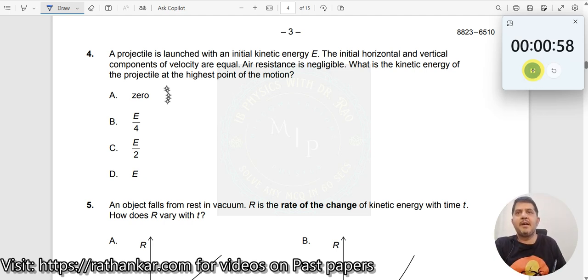Question number 4. A particle is launched with an initial kinetic energy e. The initial horizontal and vertical components of velocity are equal. So what is this problem on? This is on projectile motion.